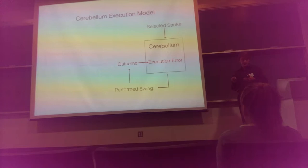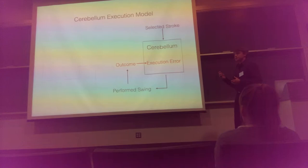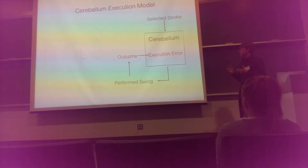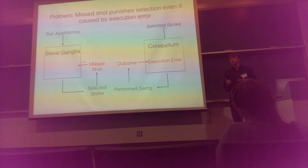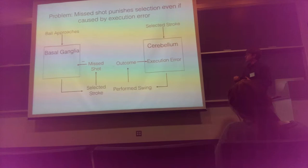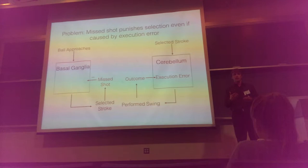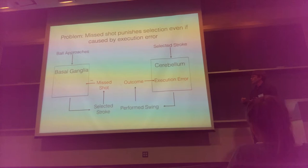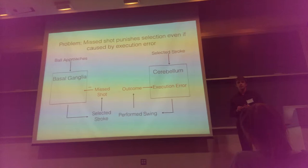We've talked about the basal ganglia selection model and the cerebellum execution model as two independent systems. Traditionally these two systems have been studied and modeled largely independently, but if we think of them as purely independent, we run into problems. Consider this example: you're playing tennis and you miss your shot into the net because you made a clear error in your execution, but the selection you made was correct. The cerebellum model sees that execution error and knows it needs to improve. But the basal ganglia selection model sees that negative reward and thinks it should negatively reinforce the selection — even though the selection was fine, and that error was really a consequence of the execution system. So we need some way for the execution system to tell the selection system: don't punish the selection you made, that was my fault.